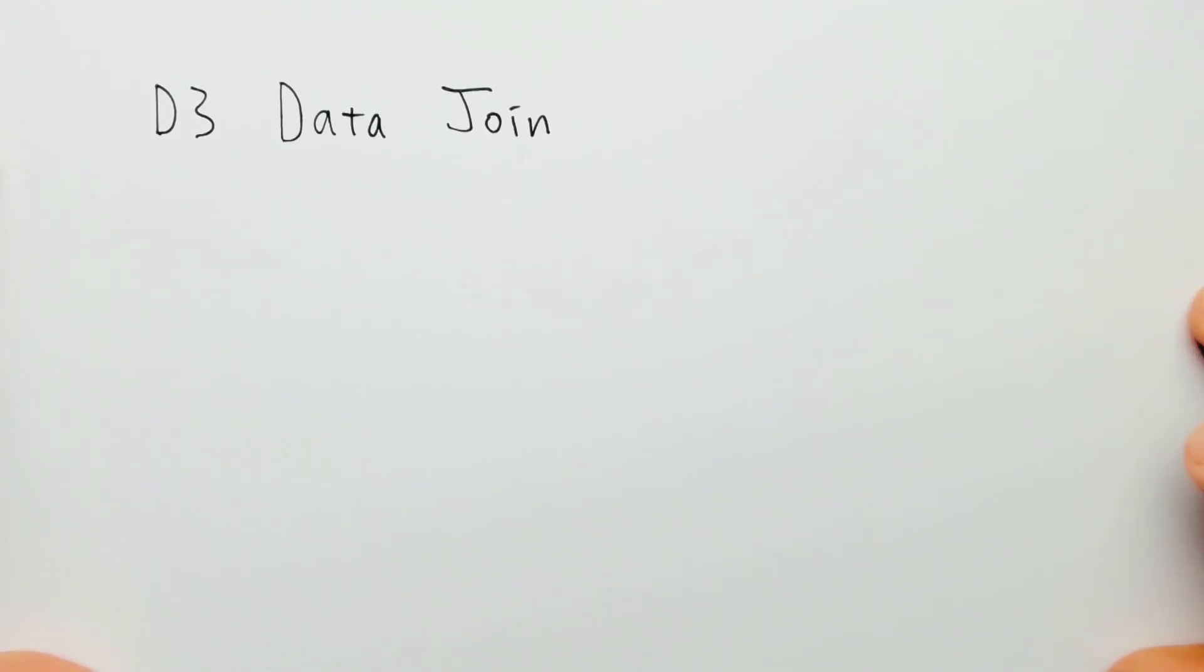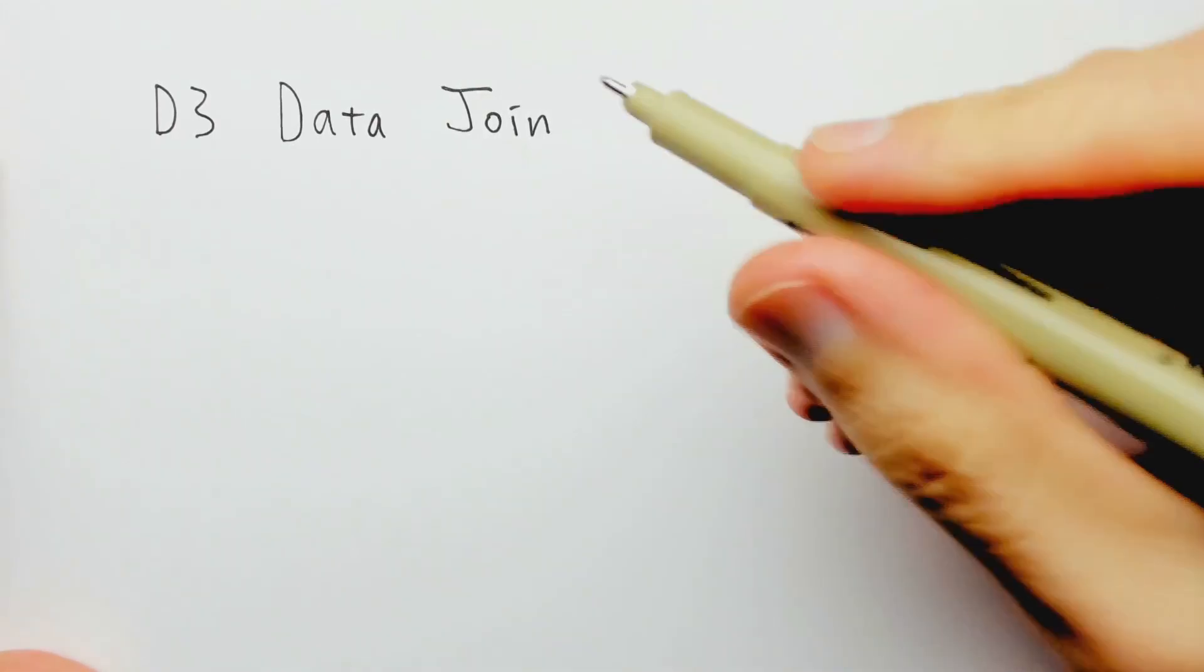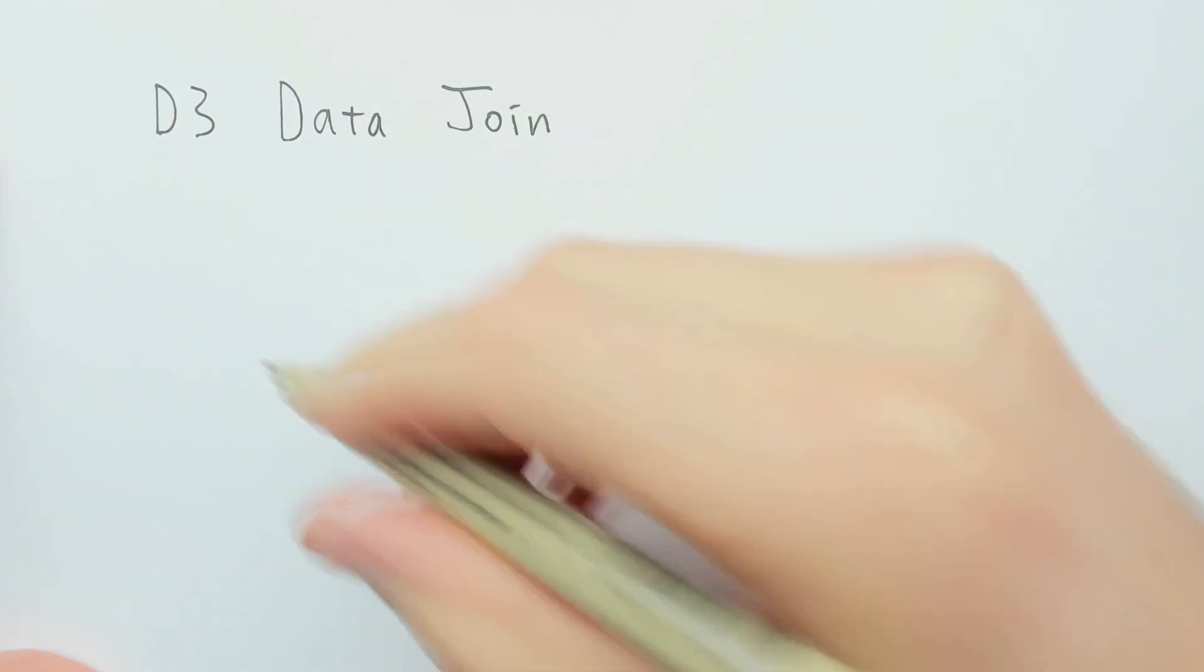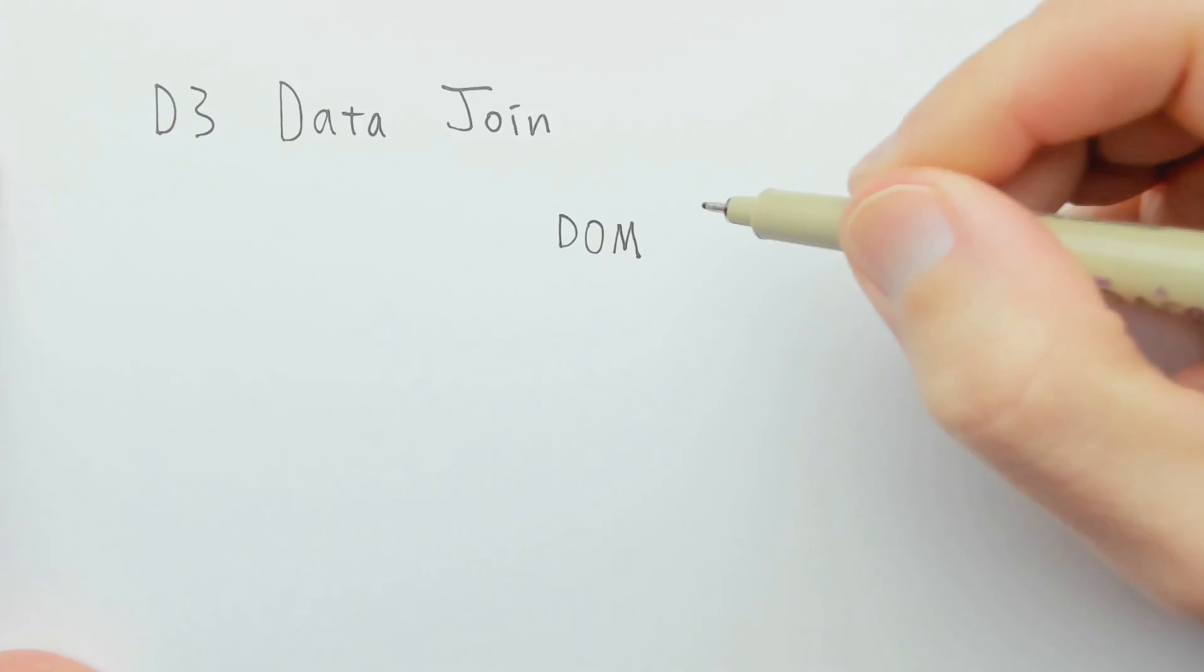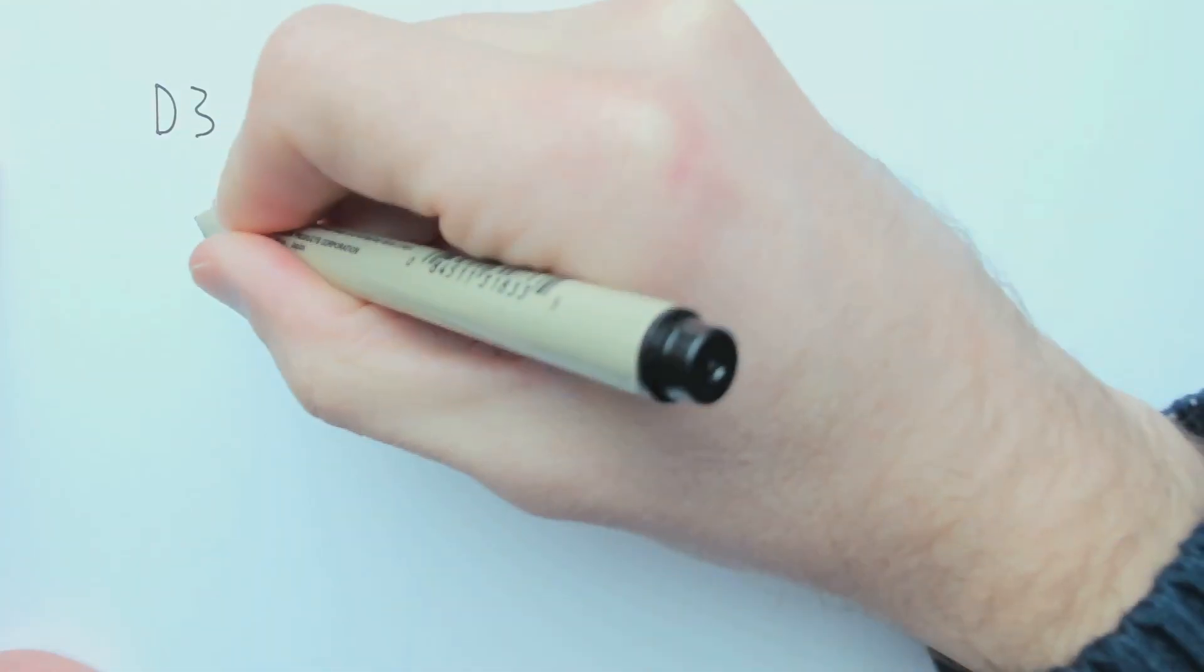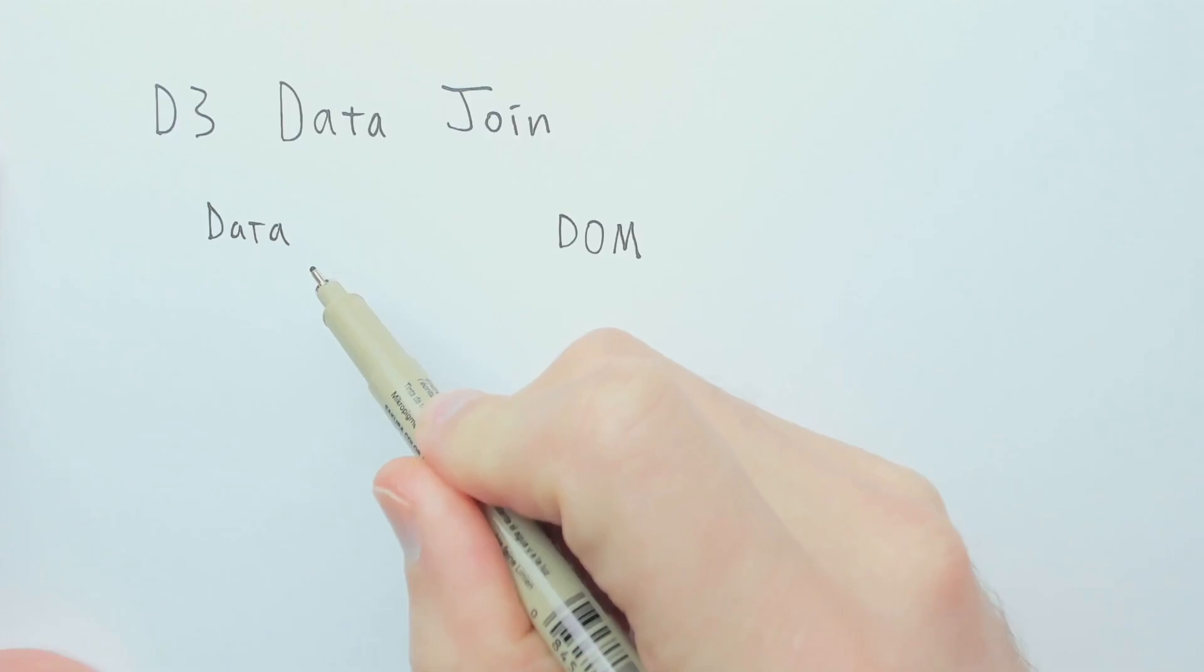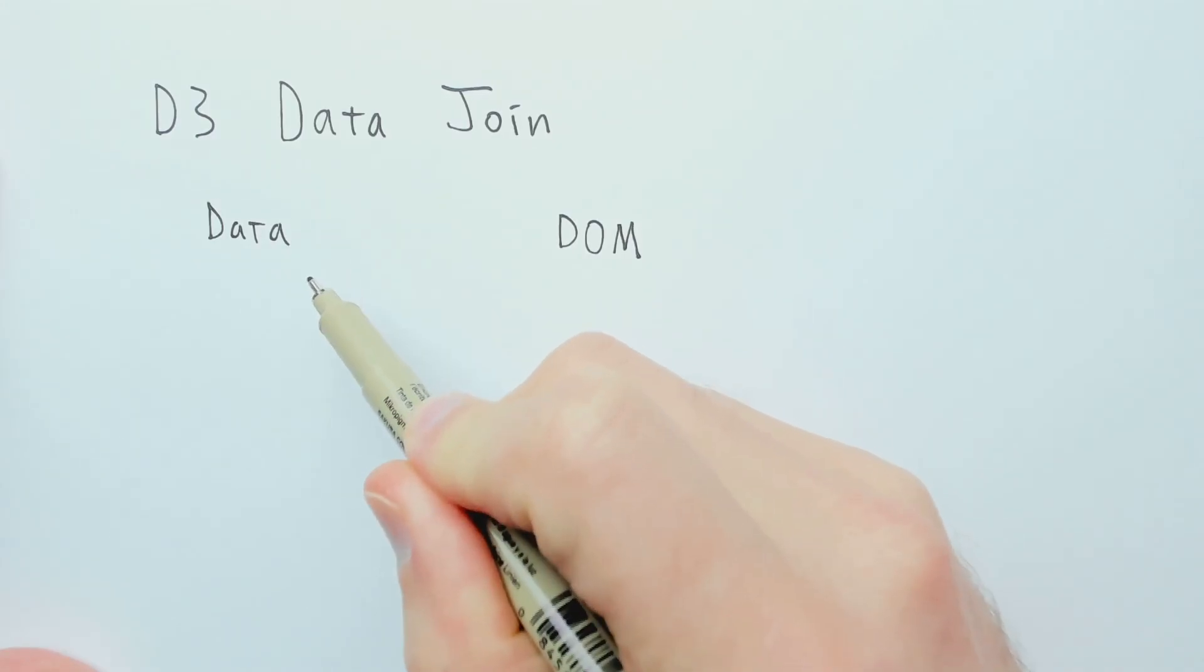The D3 data join, the point of it is to keep the DOM elements in sync with the data elements. So the data is what you pass into the .data part. It's an array, a JavaScript array.